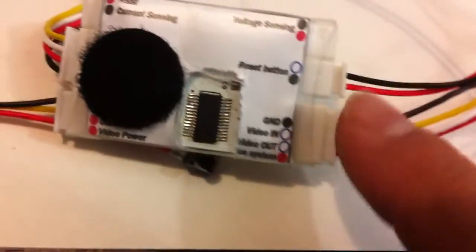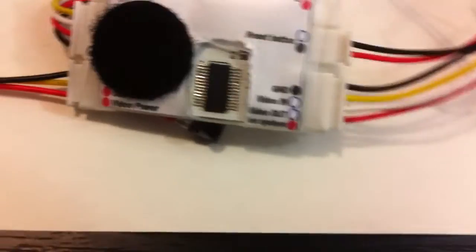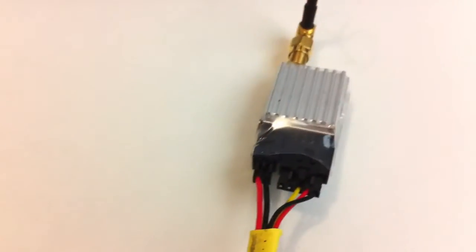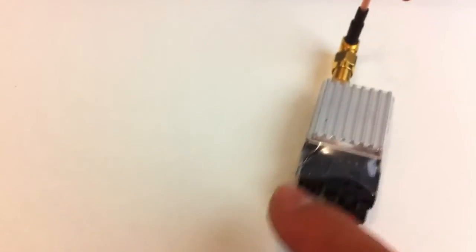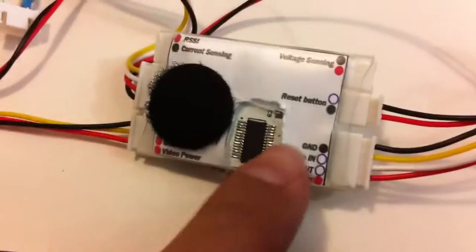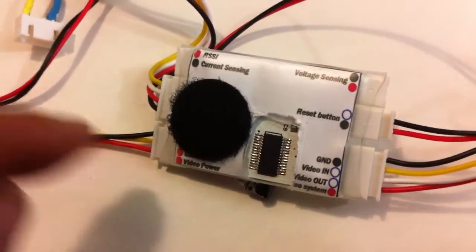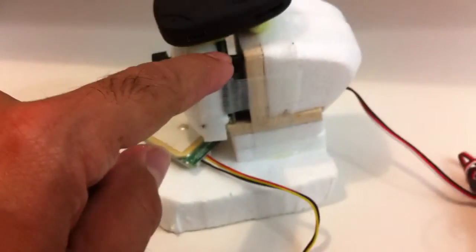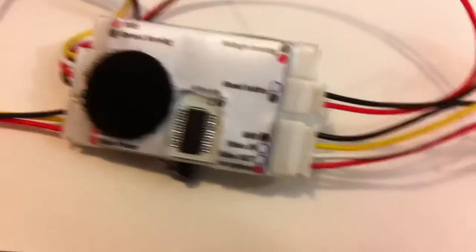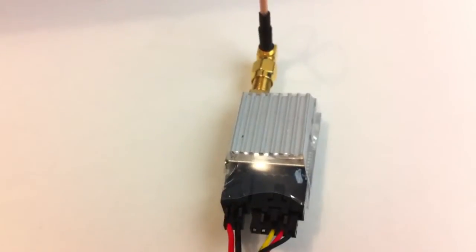And obviously you have your positive-negative. And we have the positive negative out here so that's pretty much self-explanatory. That positive negative is also used to power the video camera and also power the transmitter. So these four cables are for your video in and video out.